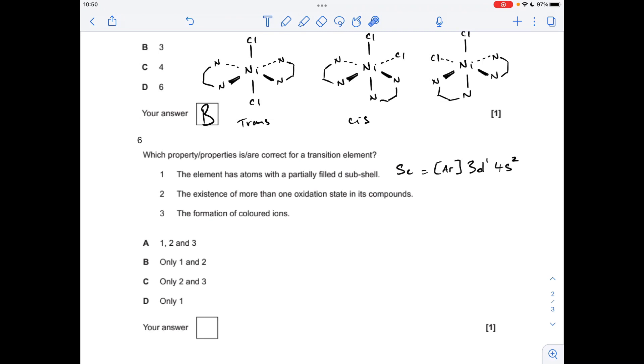Finally, number six: which properties are correct for a transition element? First one, the element has atoms with a partially filled d sub-shell. I've drawn up the shorthand configuration for scandium—you can see it does have partially filled 3d sub-shell because this can hold up to 10, it's only got one in it. So is it a transition element? Well it's not, because the only ion it forms is the 3+ ion which has that electron configuration, and the definition of a transition element is it has to be able to form an ion with an incomplete or partially filled d sub-shell. You can see this hasn't even got any d electrons, therefore it's not a transition element, so statement one was wrong.